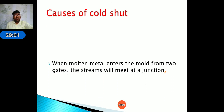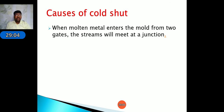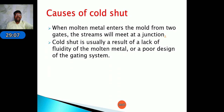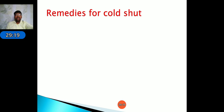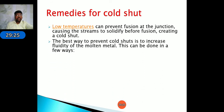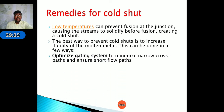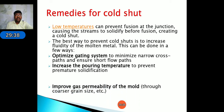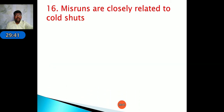Cold shot is usually a result of lack of fluidity of the molten metal or poor design of the gating system. Remedies: increase the fluidity of the molten metal by optimizing the gating system, increasing pouring temperature, and improving gas permeability of the mold.